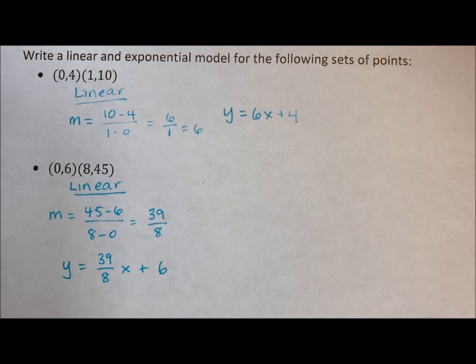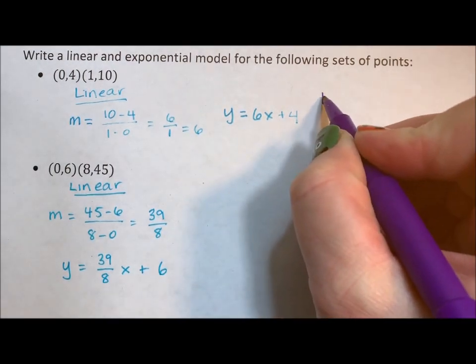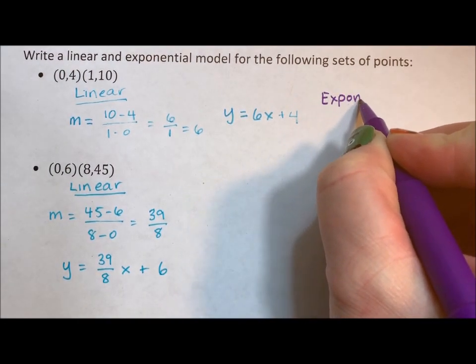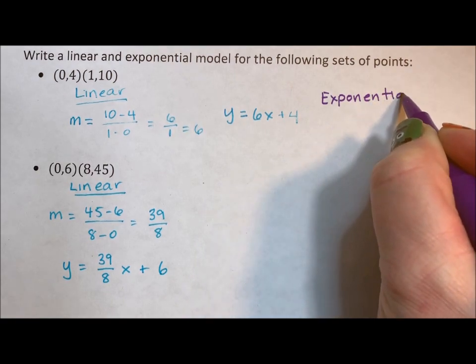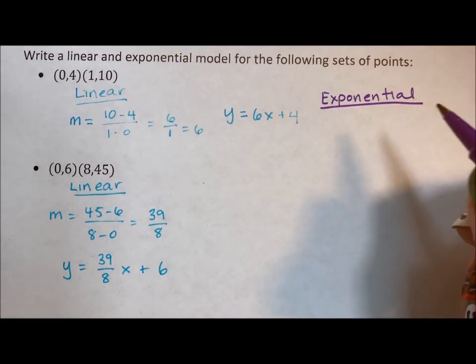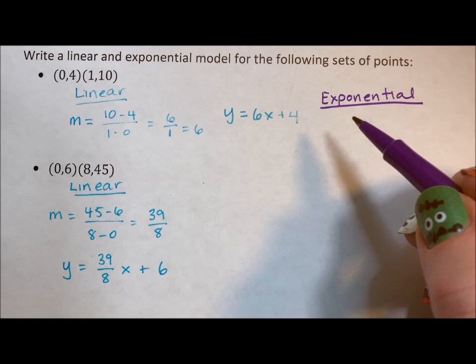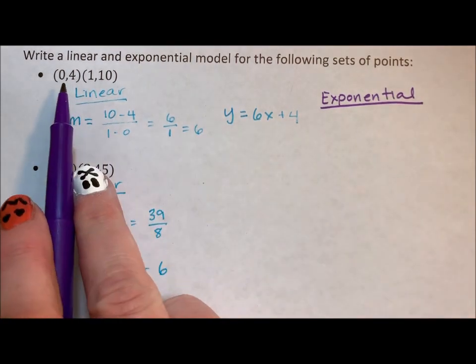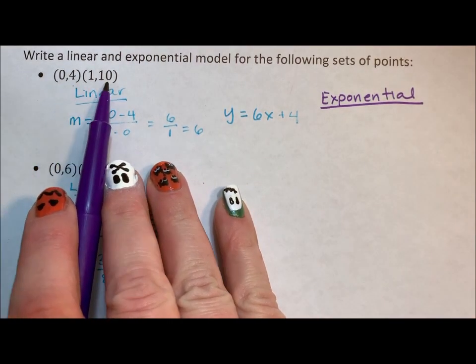Okay, so now let's look at the exponential. Linear means we add to move forward. We were trying to figure out what we add to 4 to get to 10.